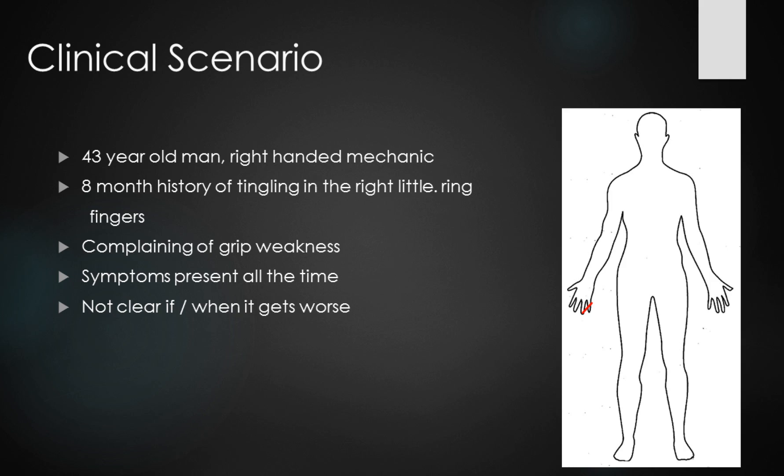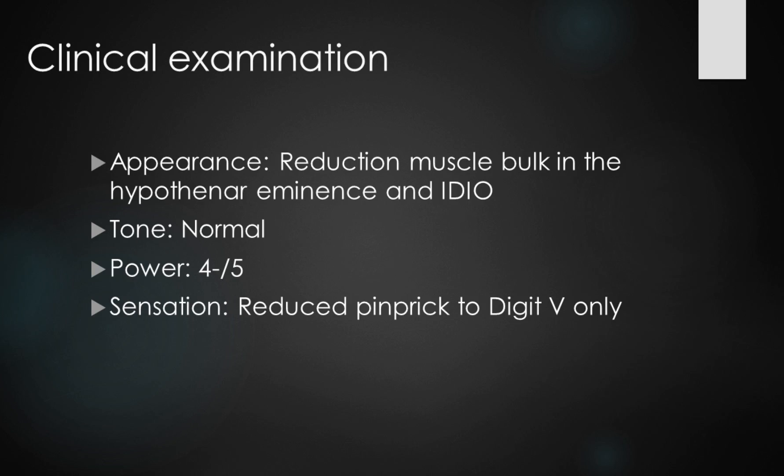He's been complaining of grip weakness and the symptoms have been present all the time now. It's not clear if and when it gets worse. On clinical examination, appearance shows reduction of muscle bulk in the hypothenar eminence in the IDIO. Tone throughout the upper limb is normal and power is 4 minus out of 5 in the intrinsic hand muscles. Sensation is reduced to pinprick to digit 5 only with normal sensation in digits 2 and 3.